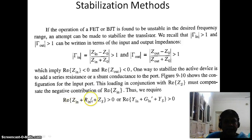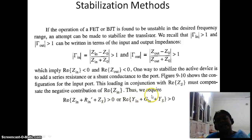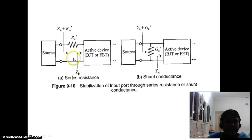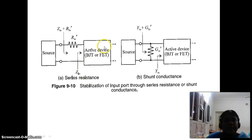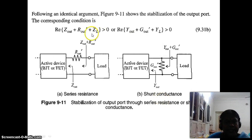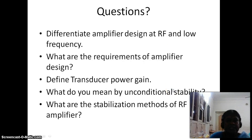So the condition becomes: real part of (Zn plus Rn_dash plus Zs) should be greater than 0, or real part of (Yin plus Gn_dash plus Ys) should be greater than 0. As indicated in the diagram, we are adding a series resistance or a shunt conductance at the input port, between the source and the amplifier. Similarly, we can stabilize at the output side through a series resistance or a shunt conductance at the output port. In this way we can achieve stability.